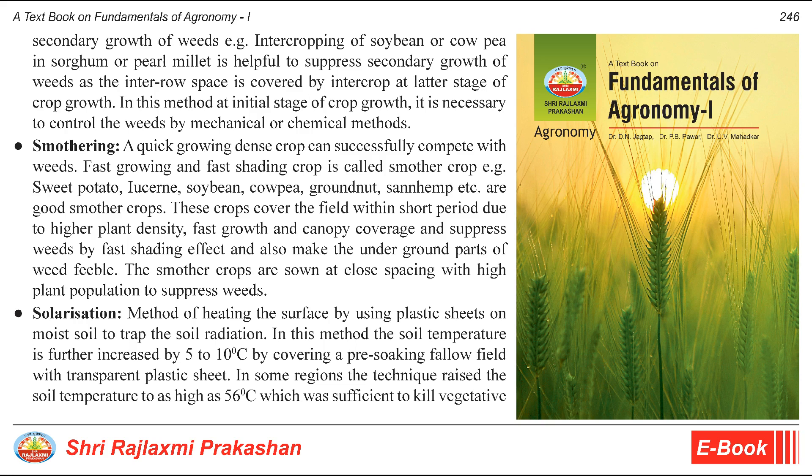Smothering: a quick-growing dense crop can successfully compete with weeds. Fast-growing and fast-shading crops are called smother crops. Examples: sweet potato, lucerne, soybean, cowpea, groundnut, sunn hemp, etc. are good smother crops. These crops cover the field within a short period due to higher plant density, fast growth and canopy coverage, and suppress weeds by fast shading effect and also make the underground parts of weeds feeble. Smother crops are sown at close spacing with high plant population to suppress weeds.